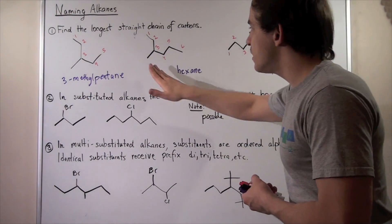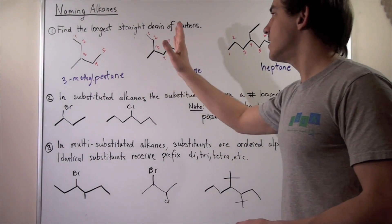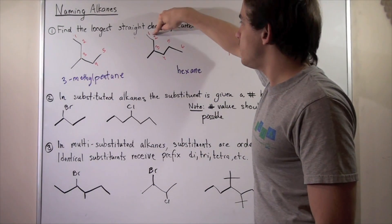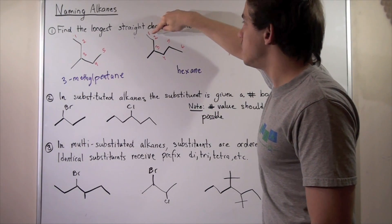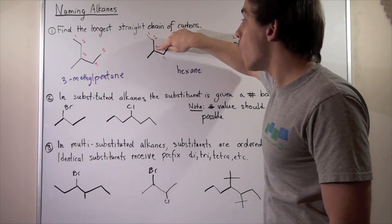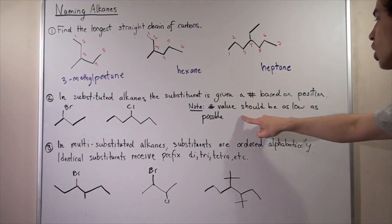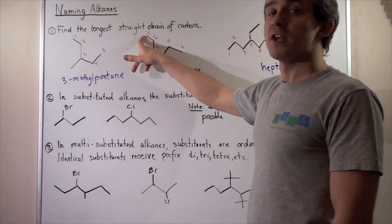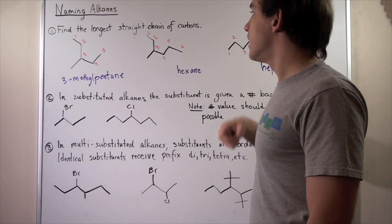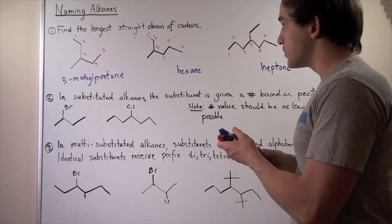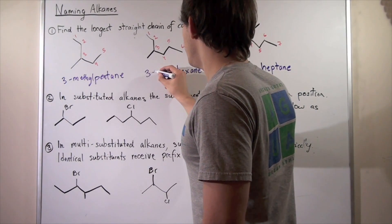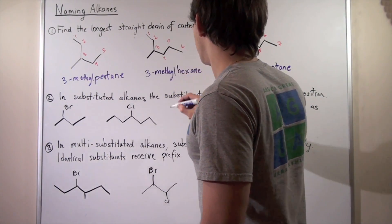In example two, it's a bit more tricky because this molecule doesn't have the same symmetry. If we begin on one side of the backbone, we get position three for the substituent. If we begin on the other side, we get position four. We want the lowest possible number, so we start from the side that gives us three. Since we have a methyl group, we have 3-methylhexane.